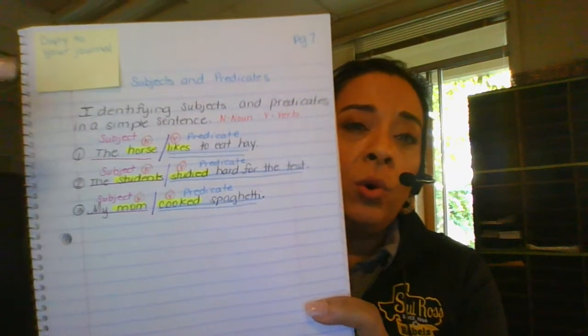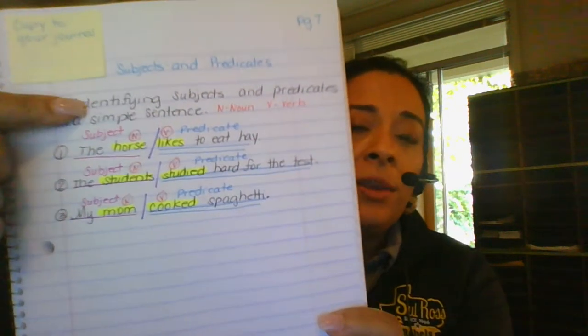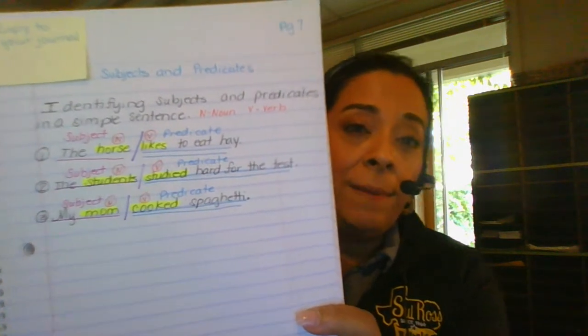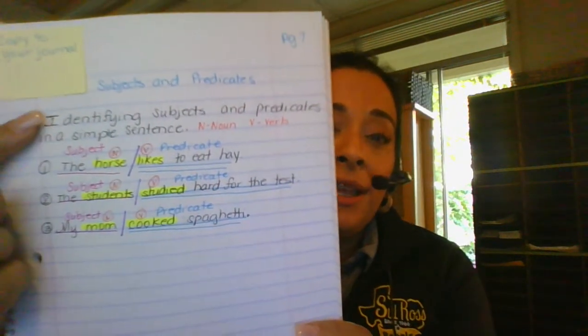So you're going to copy the whole thing except for this post-it note. You're going to title it Subjects and Predicates. And remember, all titles are capitalized except for the small words like the word and.